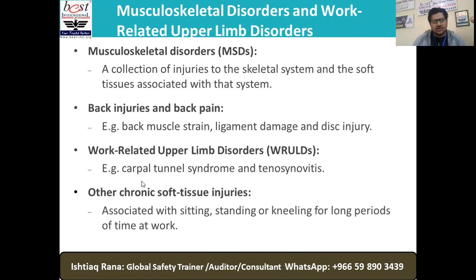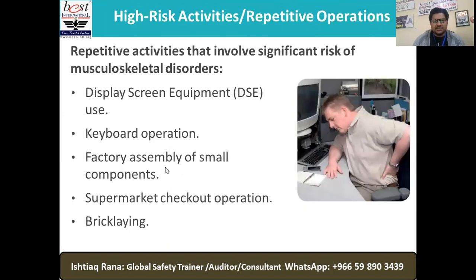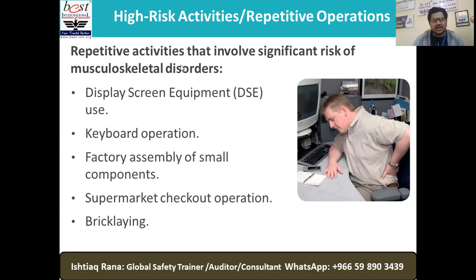Work-related upper limb disorders include carpal tunnel syndrome and tenosynovitis — chronic tissue injuries associated with sitting, standing, or kneeling for long periods at work. It's not a small thing: if your sitting posture is not good, your backbone is not straight, the way you position your legs, use your mouse, or tap your keyboard — all matters a lot. If you don't follow best safety practices, your muscles, tissues, and cells could be in trouble.